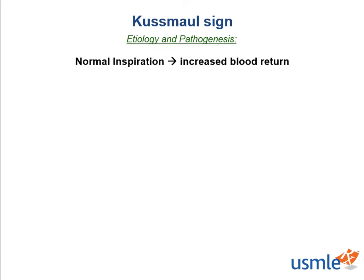Before we explain what leads to Kussmaul's sign, let's review basic intrathoracic pressure. When you breathe in, does intrathoracic pressure go down or up? It goes down. If the pressure is lower in the chest, would that make it harder or easier for blood to return from the veins to the heart? Well, if the veins are moving against less pressure, it would be easier for them to dump blood into the heart. This is why, during normal inspiration, venous return increases — and why, if you were a red blood cell sitting in the internal jugular vein, it would be easier for you to dump into the SVC and subsequently into the right atrium during this time.